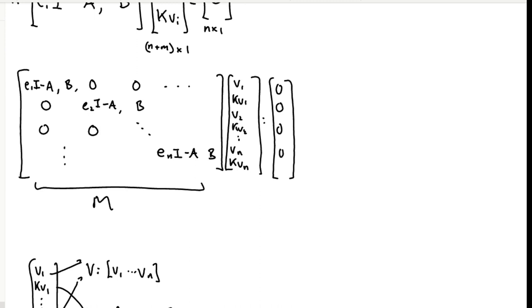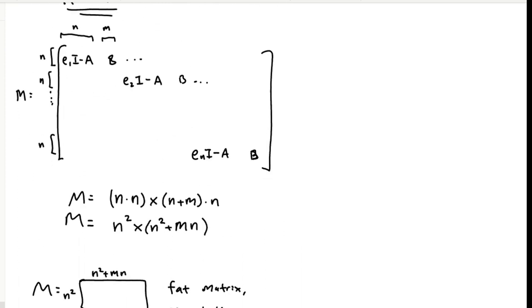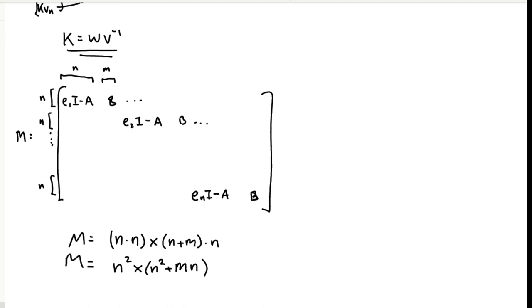This matrix M is an under-constrained system. As we said, it's an N squared by N squared plus MN sized matrix. So there are infinite solutions to it. In theory, any of those solutions could give us a valid gain matrix, but in practice, there are some issues with most of those solutions.